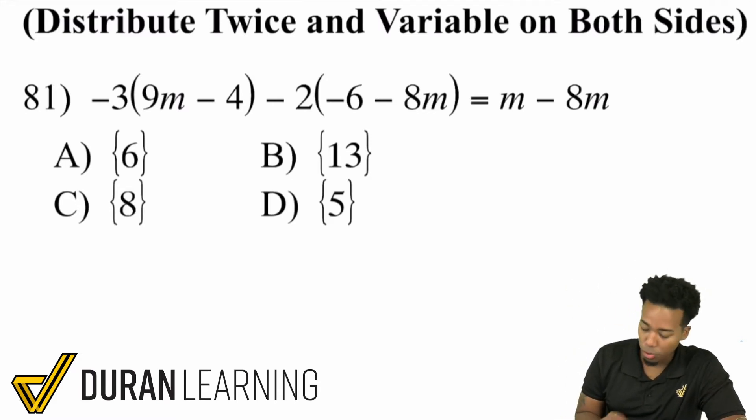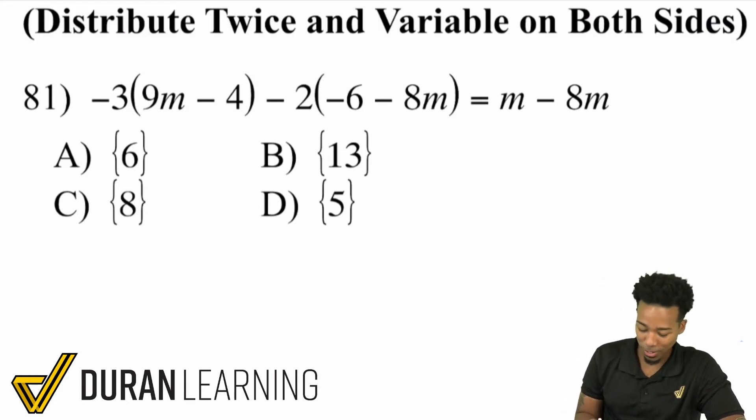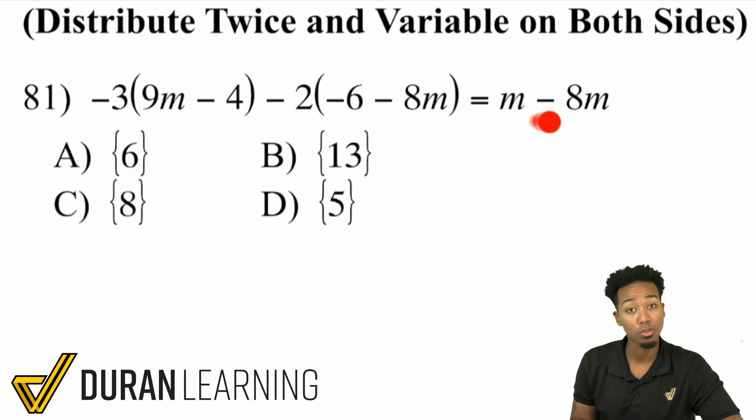So just observe first, don't just dive in without knowing what you're actually doing. The goal here is to solve for m, and we have m here, there, there, and there. We're going to have to distribute that negative three, distribute the negative two, not just the two, the negative two. And then we can combine these terms over here and we'll be fine.